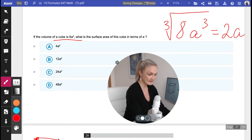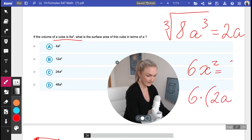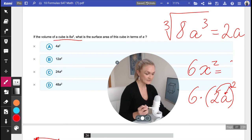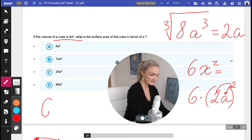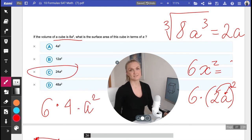So 2A is one of my sides. So what's the surface area in terms of A? No problem. I know that the surface area is 6X squared. Now, if X is one of my sides, I'm just going to say it's going to be 6 times (2A) squared. Don't forget that there's a distributive property of your exponents. So now we have 6 times 4 times A squared. Your answer is C.